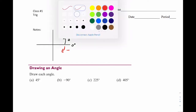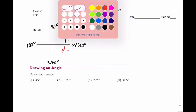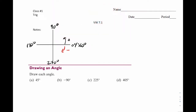So if I were to keep going in the positive direction, this would be 90, 180, 270, and 360. If you were to go in the negative direction, this would be negative 90, negative 180, negative 270, and of course, negative 360.